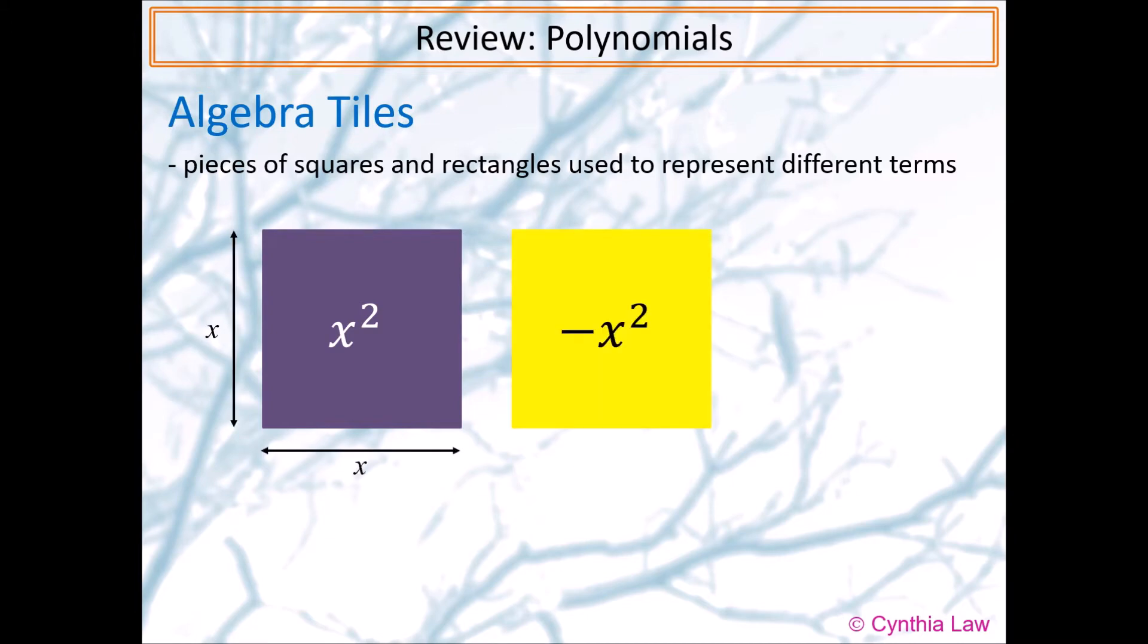Large yellow squares mean negative x squared. We note that squares cannot have negative areas, but we need something visual to help us see the negative part of the expressions.